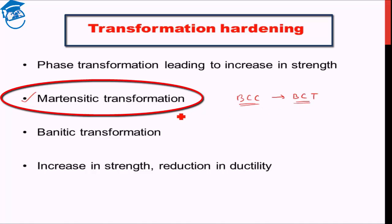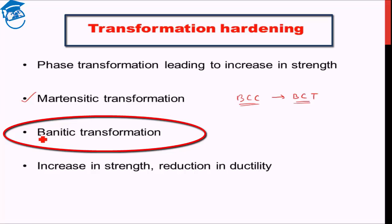Alternatively, there is what is known as bainitic transformation. Bainite is also a hard phase — not as strong as martensite, but stronger than body-centered cubic iron. The compromise in transformation hardening is that although we gain an increase in strength, we typically get a reduction in ductility in most cases.